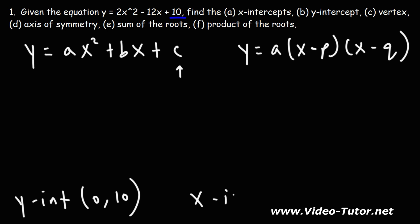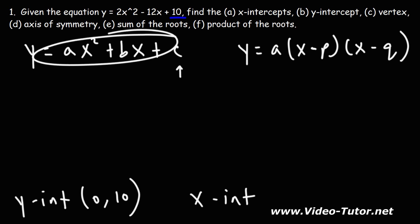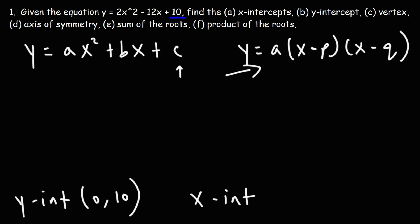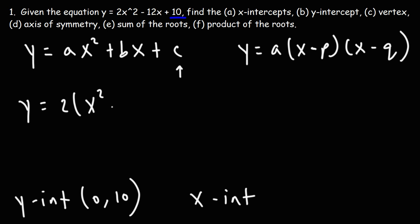Now the x-intercept is going to require more work if we have the equation in standard form, but if we can put it in intercept form, it's going to be very easy to see what the x-intercepts are. So let's do that. Starting with this equation, I'm going to factor out the GCF, which is 2. 2x² divided by 2 is x², negative 12x divided by 2 is −6x, and 10 divided by 2 is 5.